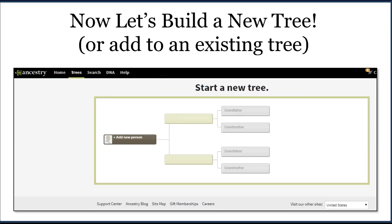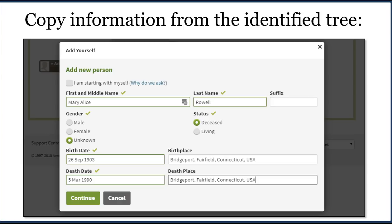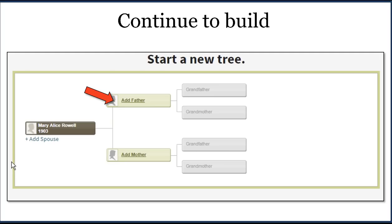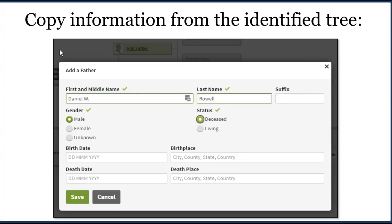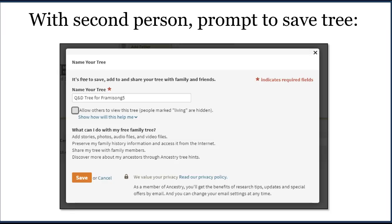Once I have this, I can build a tree for Mary Alice Rowell — either as a floating branch in an existing tree or as a brand new tree. I add Mary Alice Rowell with the birth date and death date, then add the father, Daniel W. Rowell, copying information from the identified tree. I name it 'Quick and Dirty Tree for Framasong 5.' I'm also going to uncheck the button that says 'allow others to view this tree.' I don't want other people to see this tree until I've verified it or contacted the match.